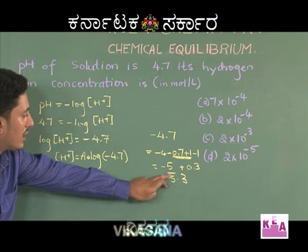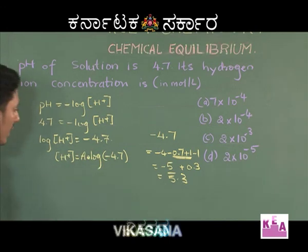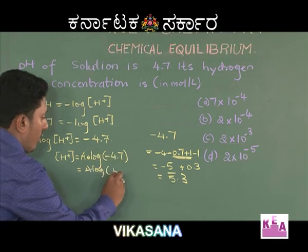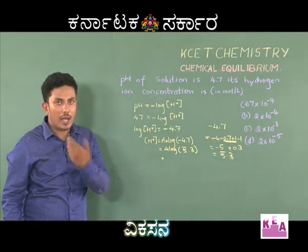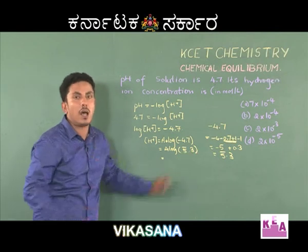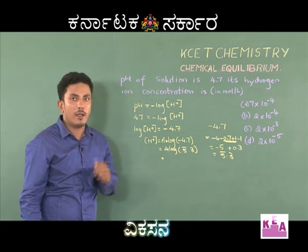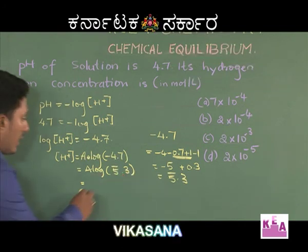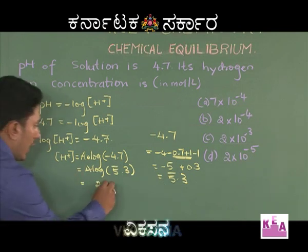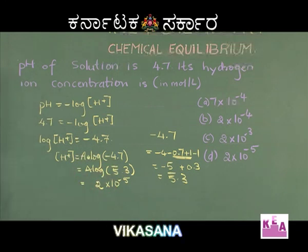This can be written as 5̄.3 (5-bar 0.3), where 5-bar indicates the characteristic is negative and the mantissa is positive. Therefore, -4.7 = 5̄.3, so H⁺ = antilog(5̄.3). We know log 2 = 0.3, so antilog(0.3) = 2. The character is -5, hence H⁺ = 2×10⁻⁵. Therefore, option D is the right answer.